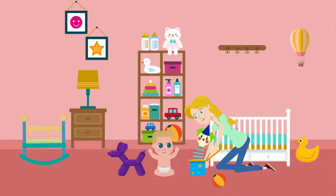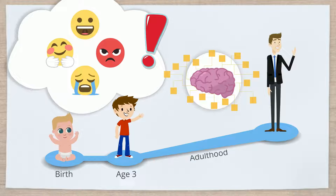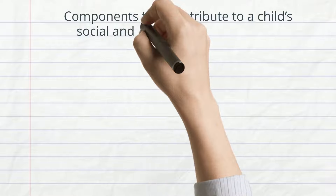What is social-emotional development in children? Social-emotional development is the evolution of a child's ability to react to and interact with their social environment. A child's social-emotional development from birth to age 3 is incredibly important, as it directly impacts their long-term brain structure and resulting behavioral patterns through adulthood. The following are the different components that contribute to a child's social and emotional development.